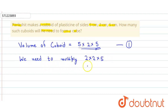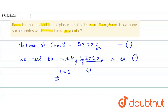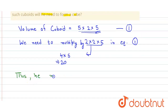We need to multiply 2 into 2 into 5 so that they form a cube. So we need to multiply by 2 into 2 into 5 in equation number 1. This number will give 4 into 5, which equals 20. So 20 is the number of cuboids that he needs to form a cube.